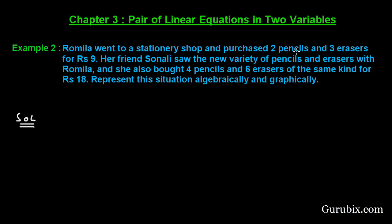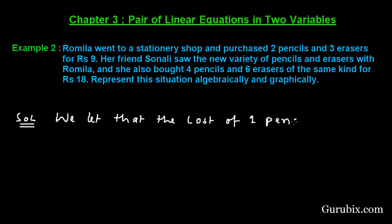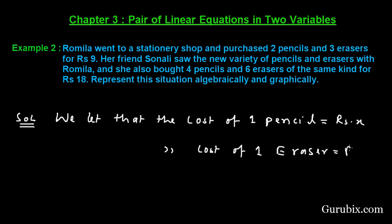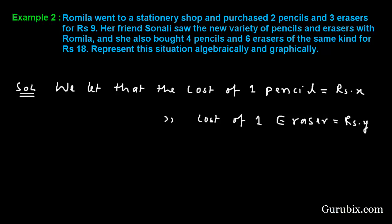There are two objects — pencils and erasers — in both conditions. So we let the cost of one pencil be rupees X and the cost of one eraser be rupees Y. Here are the two conditions given in the example.